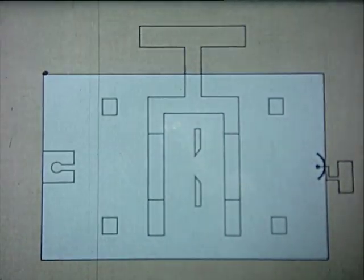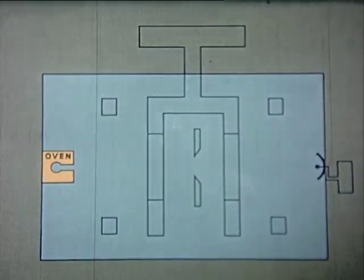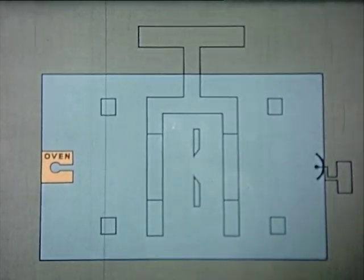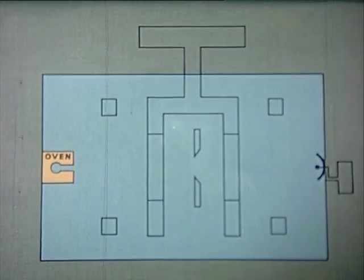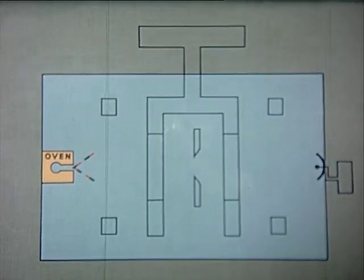Now the chamber is highly evacuated so that atoms can travel its length without collisions. The oven is heated to produce a beam of cesium atoms which are in some ways like tiny magnets and can be deflected by a non-uniform magnetic field.